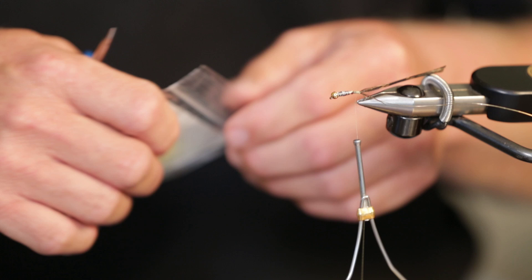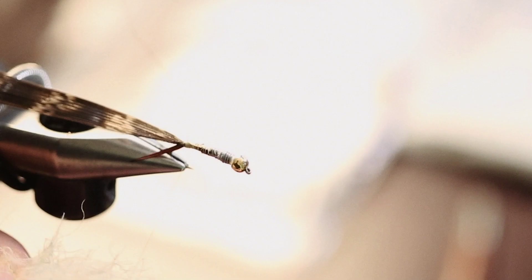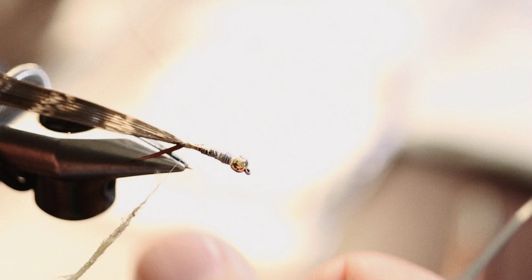Then we're going to take some CDC dubbing. Most people don't think of CDC dubbing in nymphs, but this dubbing, when we pick it out, is going to give us lots of gills and lots of fibers around the fly and going to give us a really nice buggy looking stonefly.